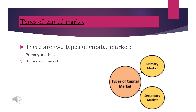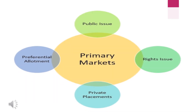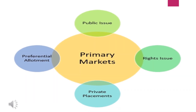Types of Capital Market: There are two types — the Primary Market and the Secondary Market. The Primary Market includes public issues, right issues, private placement, and preferential allotment.